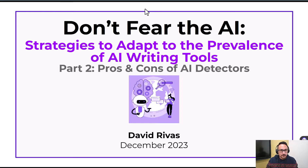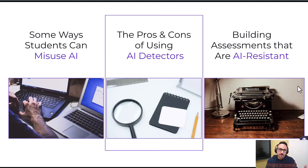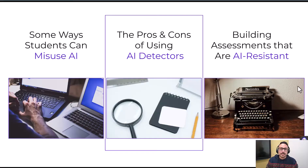This is the second video in the 'Don't Fear the AI' series. The goal is to help you understand AI a little better so you don't have to be afraid of it, but be aware of it. This video is going to go over the pros and cons of using AI detectors — mostly cons. In the last video I showed how a student can use ChatGPT and Google Docs to create a piece of writing they could pass off as their own, and one way to prevent that is using AI detectors.